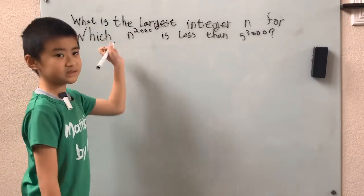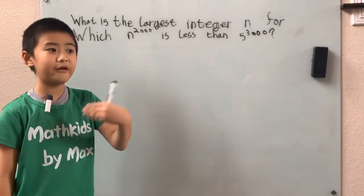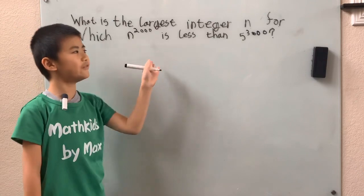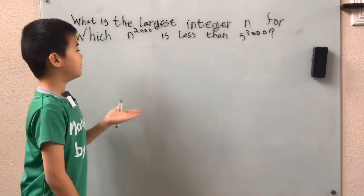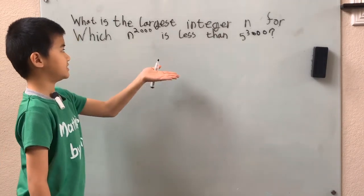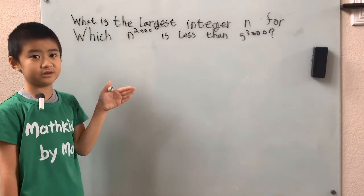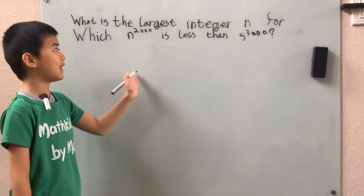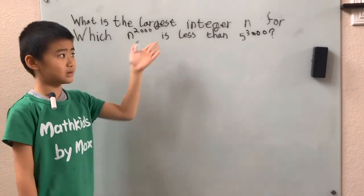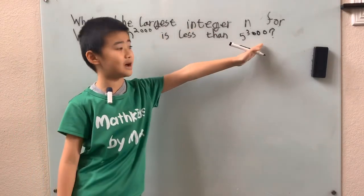But since we don't know about this n, since that's what we're trying to find, we have to do something with the exponents. But, well, 3,000 is not divisible by 2,000 so we're going to have to multiply 2,000 by something as a fraction to get 3,000.